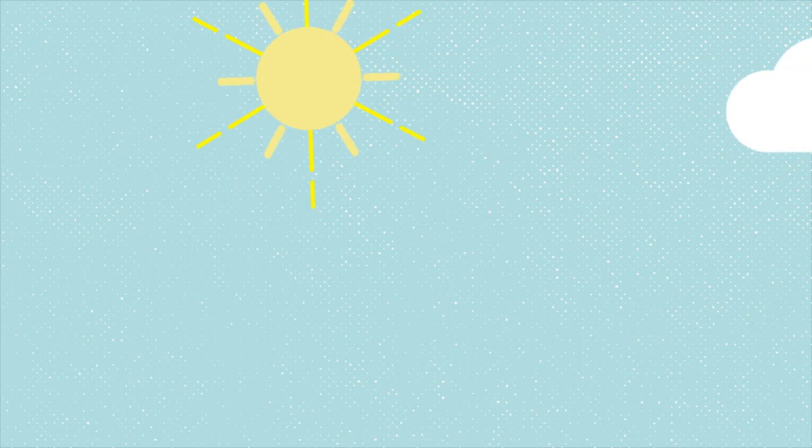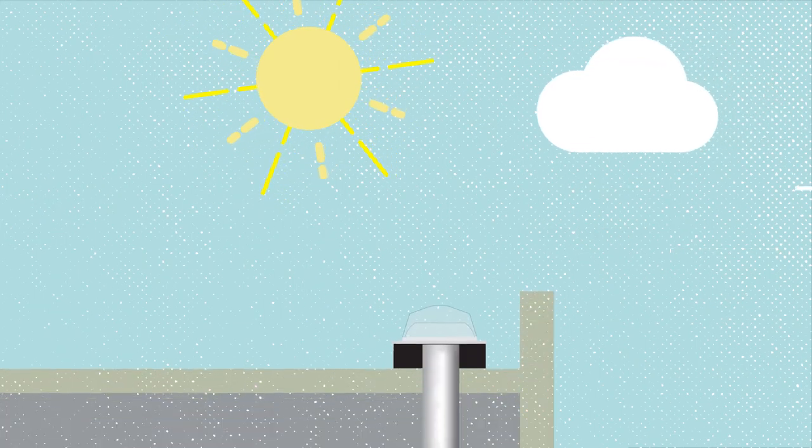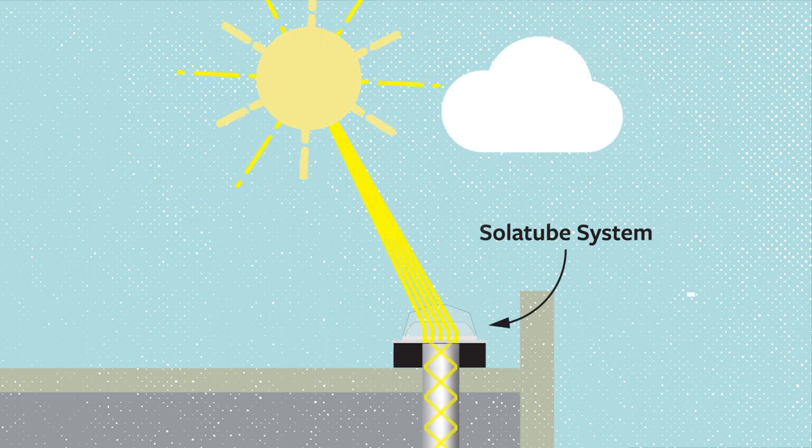Solar noon is when the sun is at its highest point in the sky, a slightly different time each day. The solar noon indicator uses a solar tube system that collects light through a lens on the roof, even on a cloudy day.